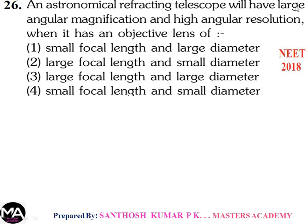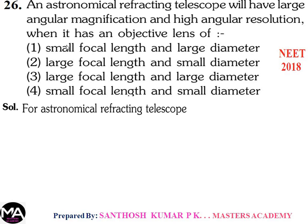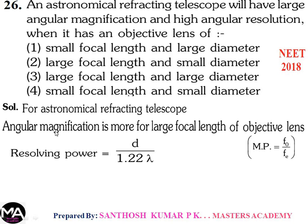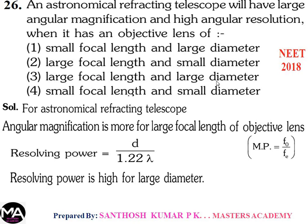Question 26: For an astronomical refracting telescope to have large angular magnification and high angular resolution, what should the objective lens have? Angular magnification = F0/FE, which is maximum for large F0. Resolving power = d/(1.22λ), which is large for large diameter d. Therefore the objective lens should have large focal length and large diameter. Option 3.